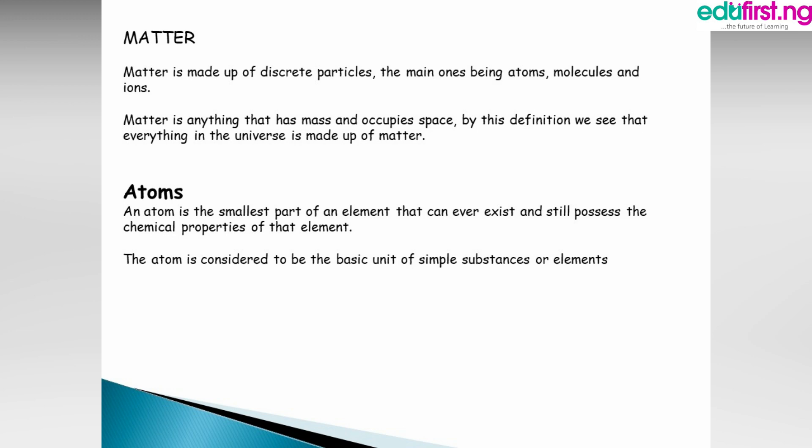Before we get into atoms and molecules, we have to know what matter is. Matter is made up of discrete particles, the main ones being atoms, molecules, and ions. The general definition of matter is that matter is anything that has mass and occupies space. By this definition, everything in the universe is made up of matter — even the air, water, anything that has mass and occupies space.